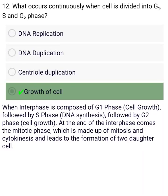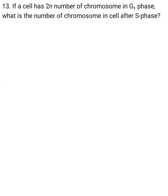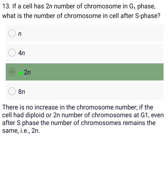Continuously when a cell is divided into G, S, and G phases. If a cell has 2N number of chromosomes in G1 phase, what is the number of chromosomes in the cell after S phase?